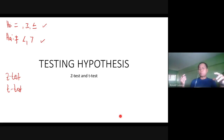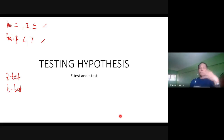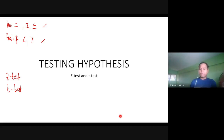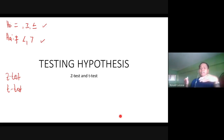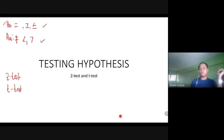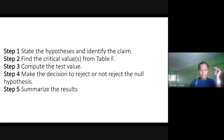Next, you conduct the study — for example, distributing questionnaires; if we're online, this could be done through Google Forms. You collect the data, then evaluate it: the data should be tabulated and a statistical test conducted. Finally, you decide whether to reject H₀ or accept Hₐ, and the last part is to summarize the result.